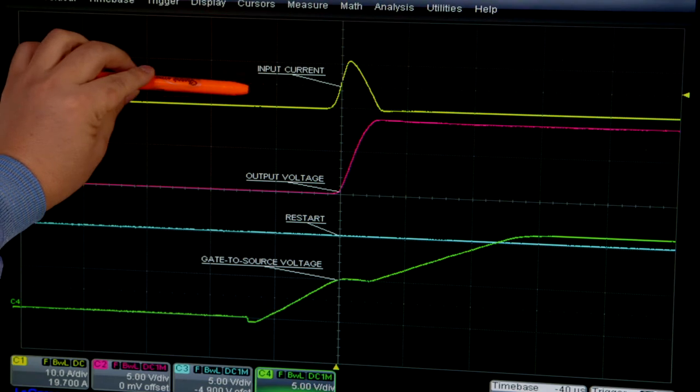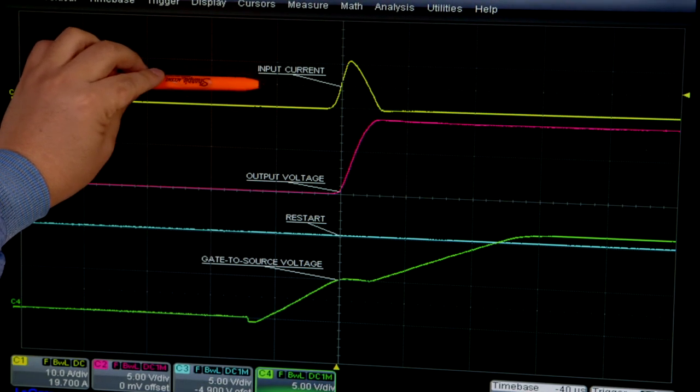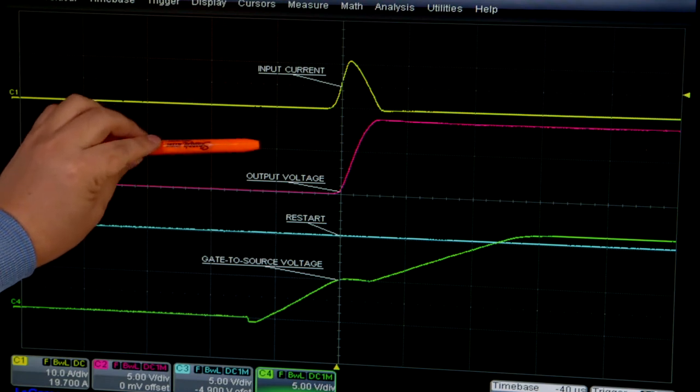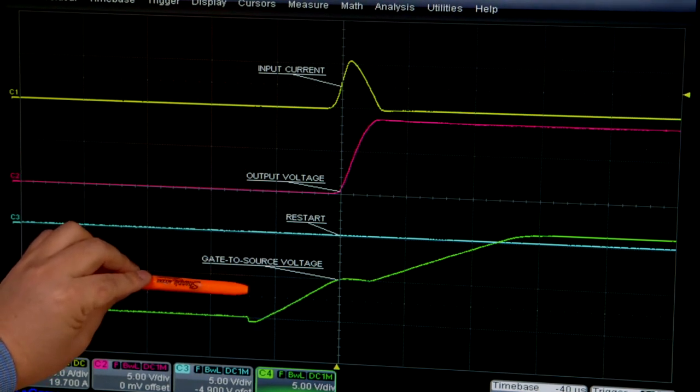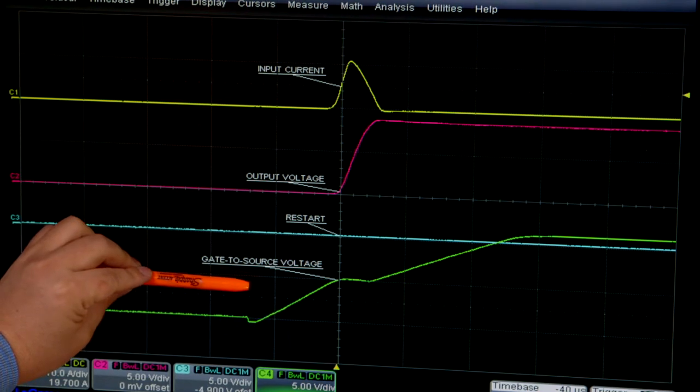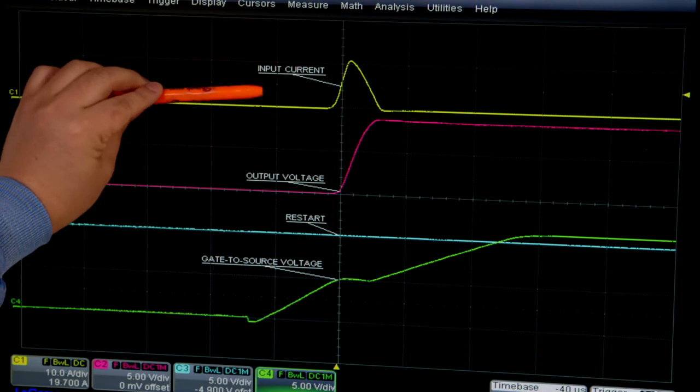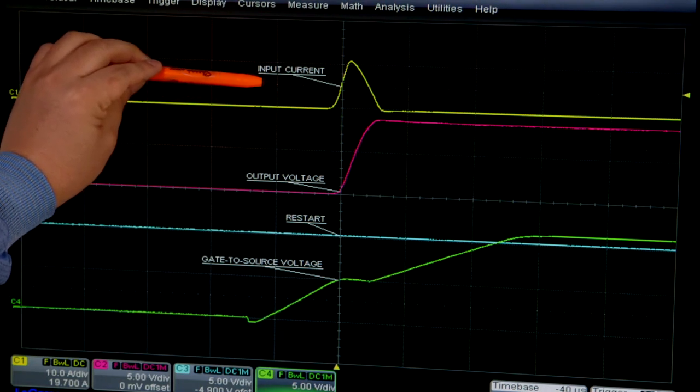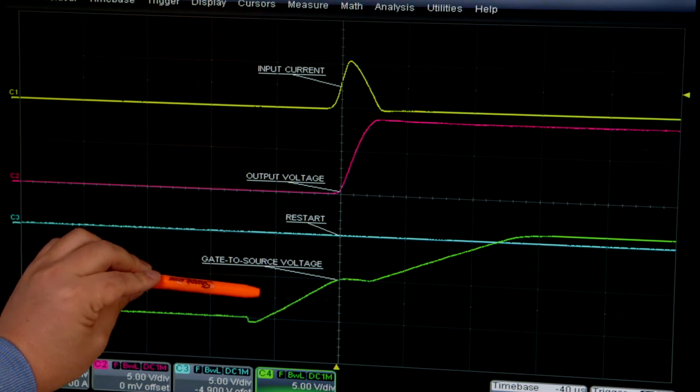Here is the waveforms. Yellow trace is the input current. Red trace is output voltage. Green trace is the gate to source voltage of the disconnection switch. As you can see, the input current is limited by slowly turning on the disconnection switch.